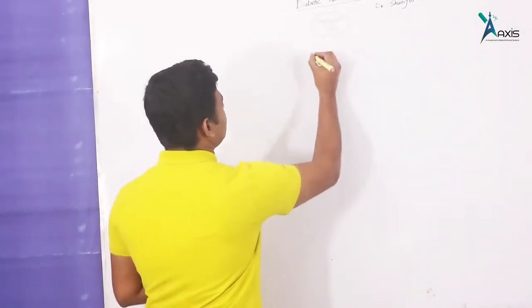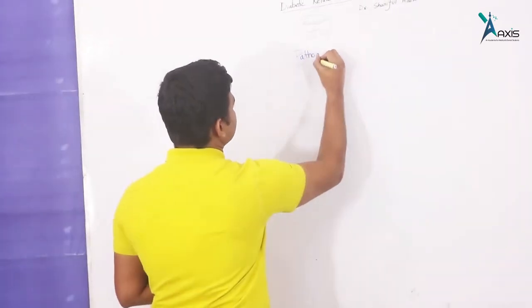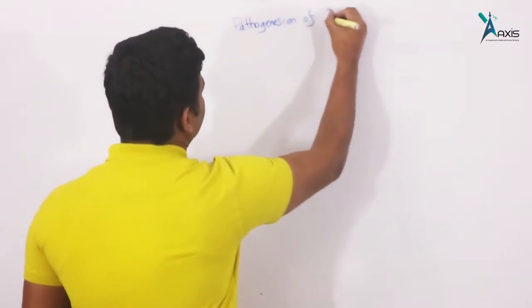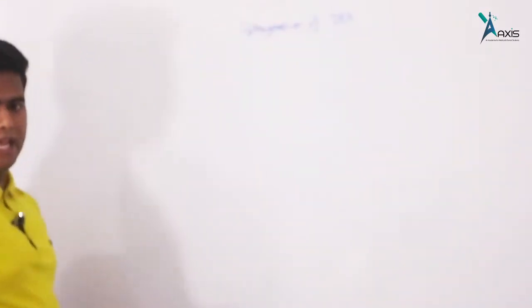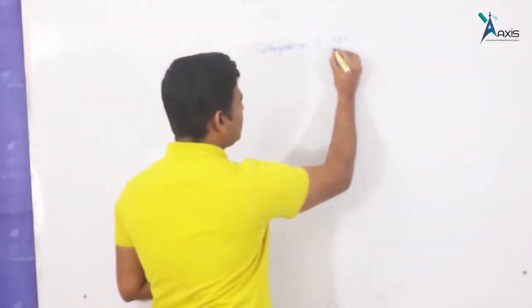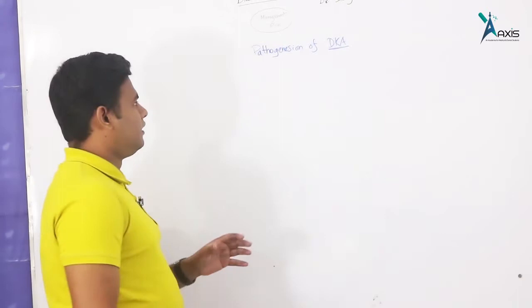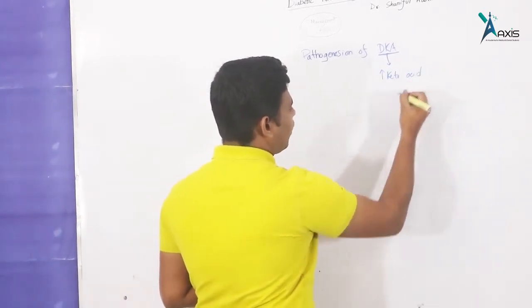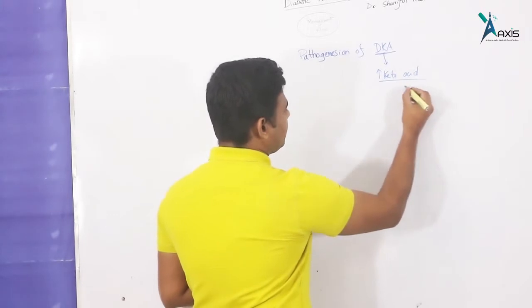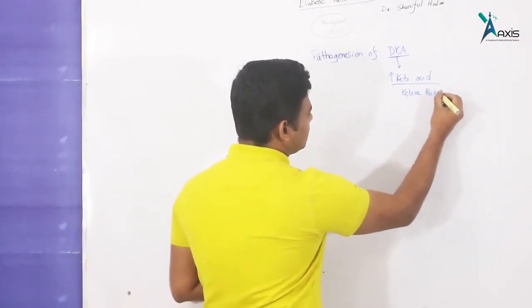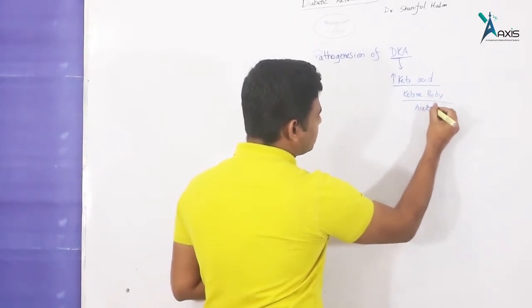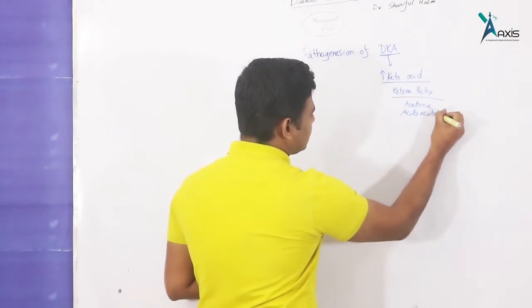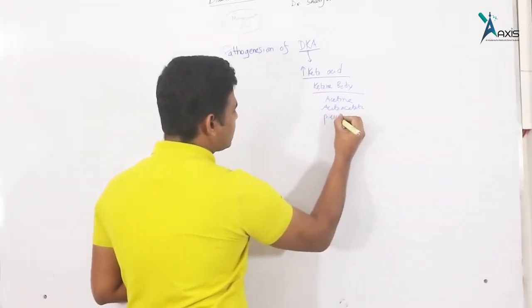This is just a basic idea of how we speak about diabetic ketoacidosis. This is the pathogenesis of diabetic ketoacidosis. In a diabetic patient's body, an excessive amount of ketoacidosis is formed. The ketone bodies include acetone, acetoacetate, and beta-hydroxybutyrate.